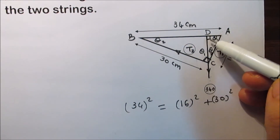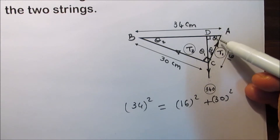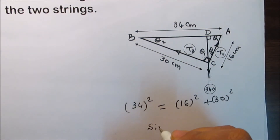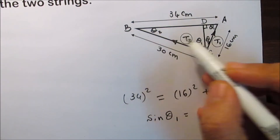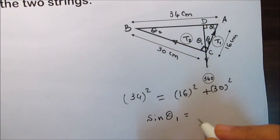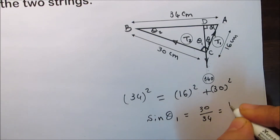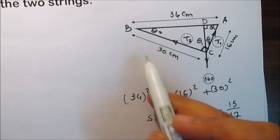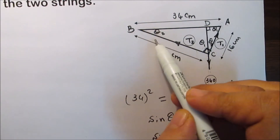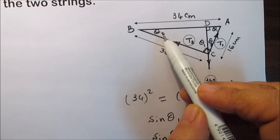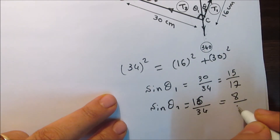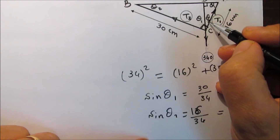In triangle ABC it is easy to find sine of angle A, which equals sine of θ₁. Sine of angle A equals the opposite side over the hypotenuse, which is 30 over 34, simplified to 15 over 17. Similarly, sine of angle B equals sine of θ₂, which equals the opposite side over the hypotenuse: 16 over 34, simplified to 8 over 17.